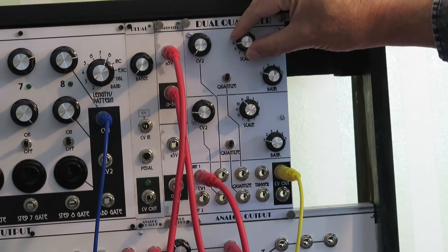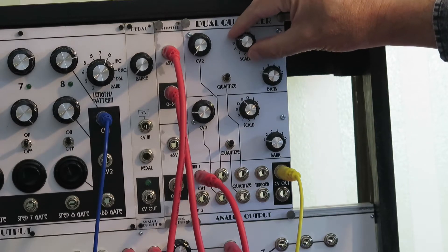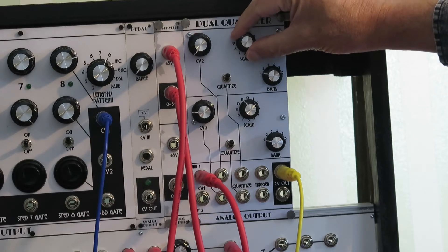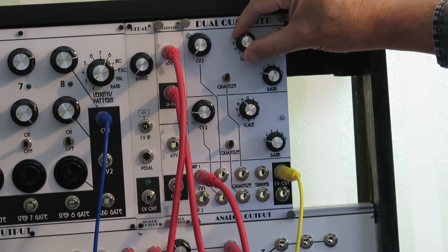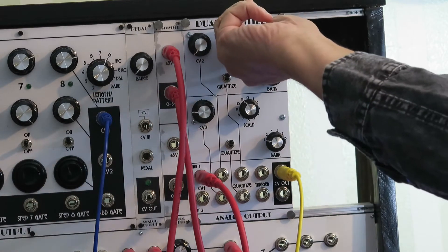Major triad, minor triad, dominant 7th, and diminished 7th, so that's the first bank.